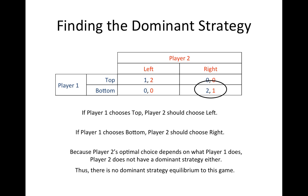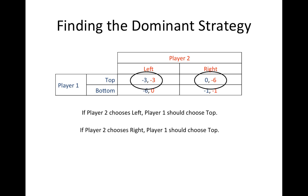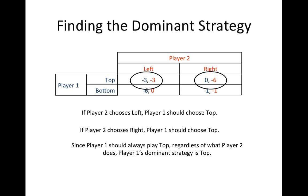Since neither player has a dominant strategy, there is no dominant strategy equilibrium to this game. Let's consider another example in which players do have a dominant strategy. In this case, if player 2 chooses left, player 1 should choose top, since player 1 would prefer losing 3 to losing 6. If player 2 chooses right, then player 1 should still choose top, since losing nothing is preferable to losing 1. Since player 1 should always play top, regardless of what player 2 does, player 1's dominant strategy is to play top.